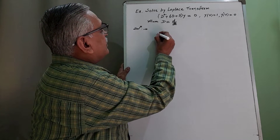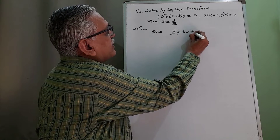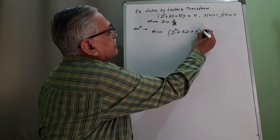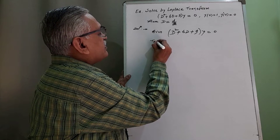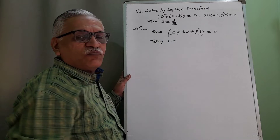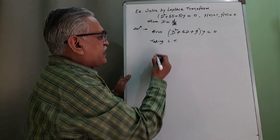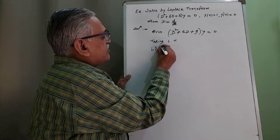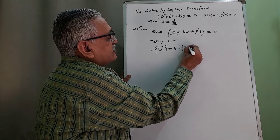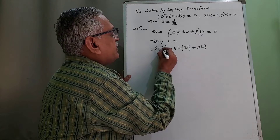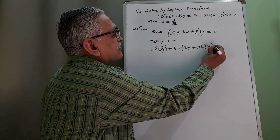The given differential equation is (D² + 6D + 9)y = 0. Taking Laplace transform on both sides, we get the Laplace transform of each term on the left-hand side equal to the Laplace of the right-hand side: Laplace of d²y, plus 6 times Laplace of dy, plus 9 times Laplace of y, equals 0.